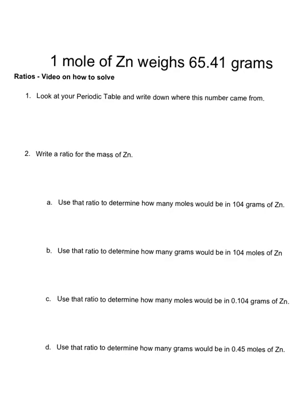Now we're going to look at how to use ratios to solve problems. The first question is look at your periodic table and write down where the previous number came from. If we look at the periodic table, it came from the atomic mass.